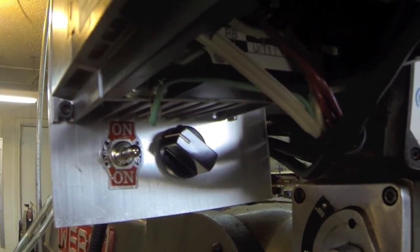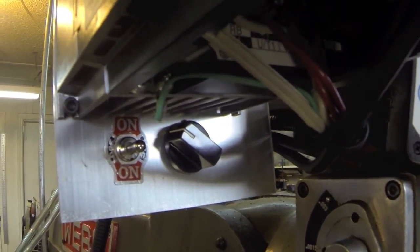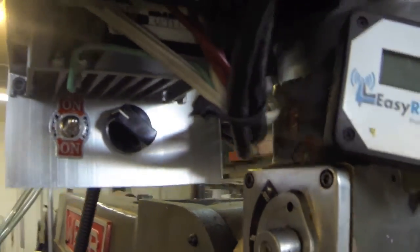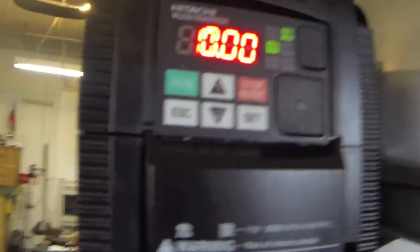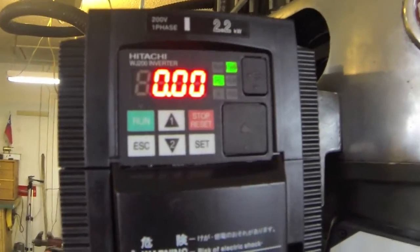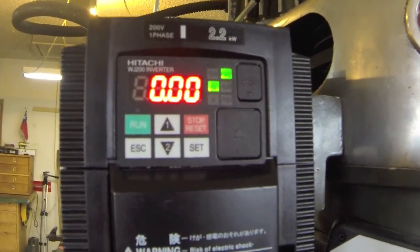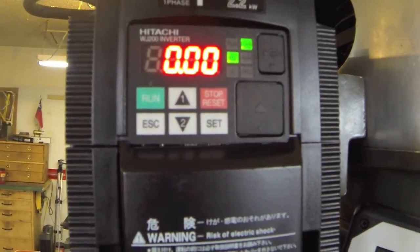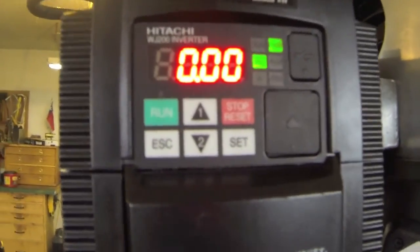This is a little bit better view of the pot and the switch. The wiring goes up underneath the face panel of the Hitachi WJ200. It's a 3 horsepower VFD.